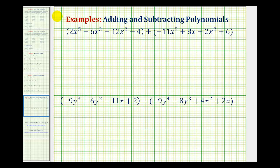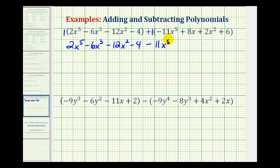But if it's helpful, we could think of putting a one here and a one here, and then distributing a positive one. But we know if we multiply something by a positive one, it's not going to change anything. So we would have two x to the fifth minus six x to the third minus twelve x squared minus four. And then here we're multiplying by a positive one, so we're going to have minus eleven x to the fifth plus eight x plus two x squared plus six. When adding polynomials, we can just go ahead and eliminate the parentheses.